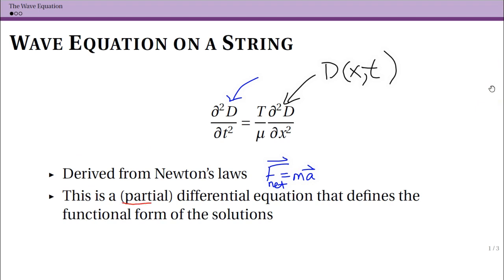Note that the funny looking D is a partial derivative. That means you're taking your function, in this case displacement D, and taking the derivative with respect to one of its values. It depends on two different variables. So that's what the funny looking D is, a partial derivative.